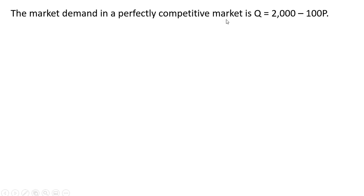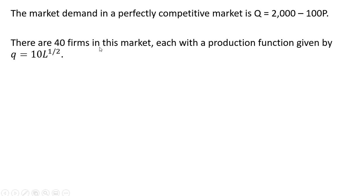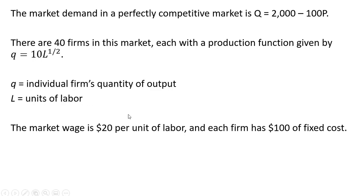The market demand in a perfectly competitive market is given by Q equals 2000 minus 100P. There are 40 firms in this competitive market, each with a production function given by the following. Lowercase q is the individual firm's quantity of output. L is units of labor. The going market wage is $20 per unit of labor, and each firm has $100 of fixed cost.